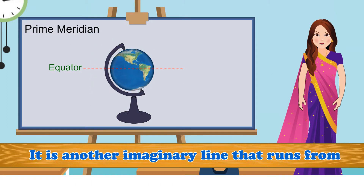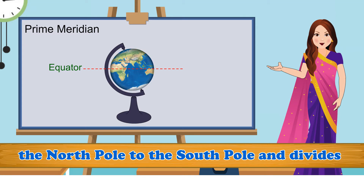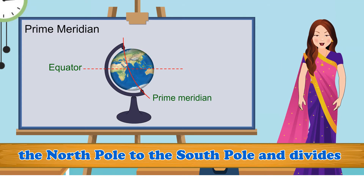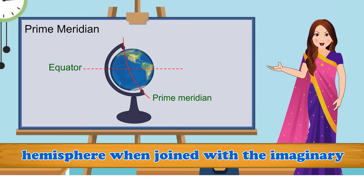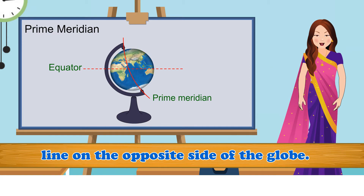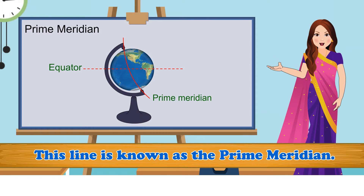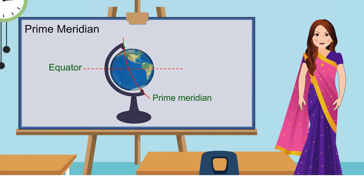Prime Meridian: It is an imaginary line that runs from the North Pole to the South Pole and divides the Earth into the eastern and western hemisphere when joined with the imaginary line on the opposite side of the globe. This line is known as the prime meridian.